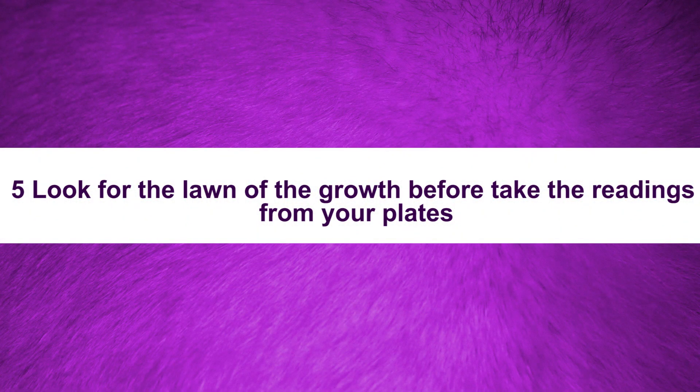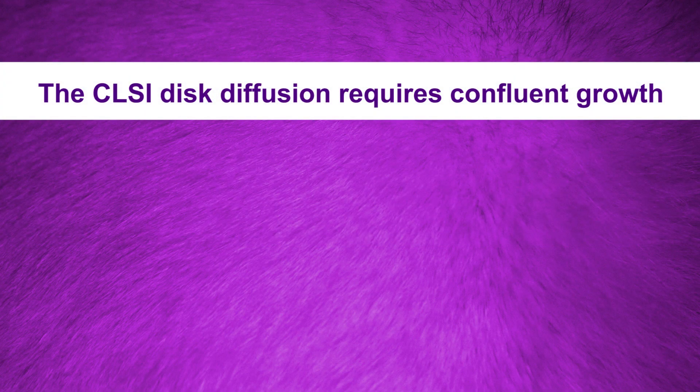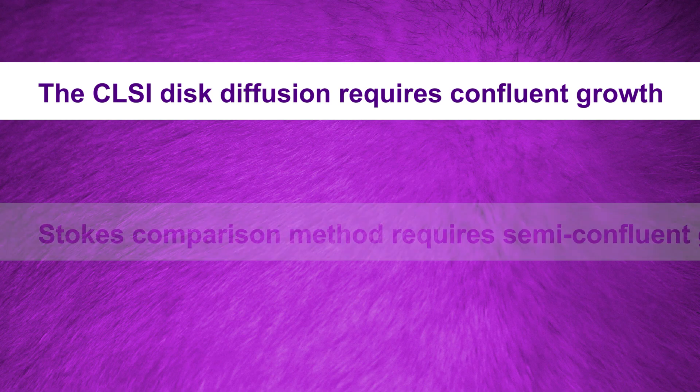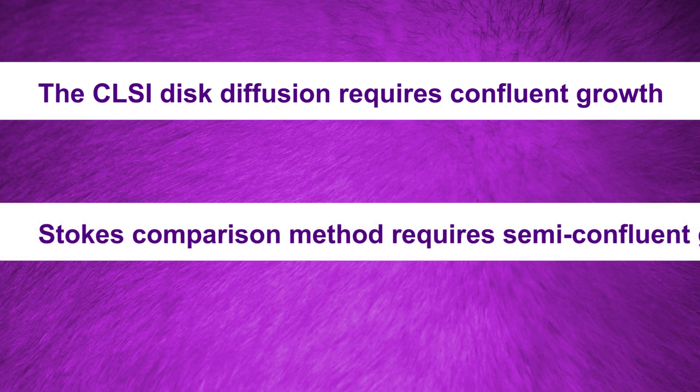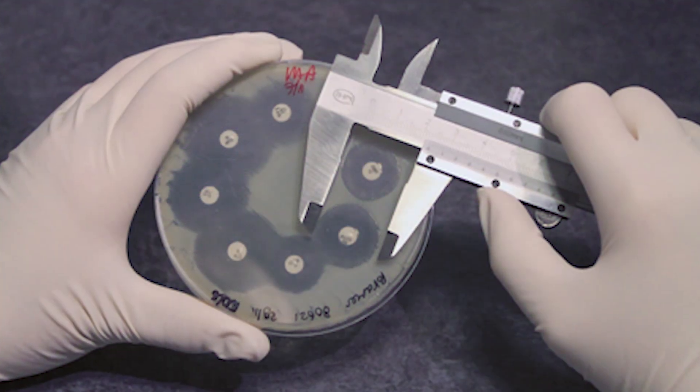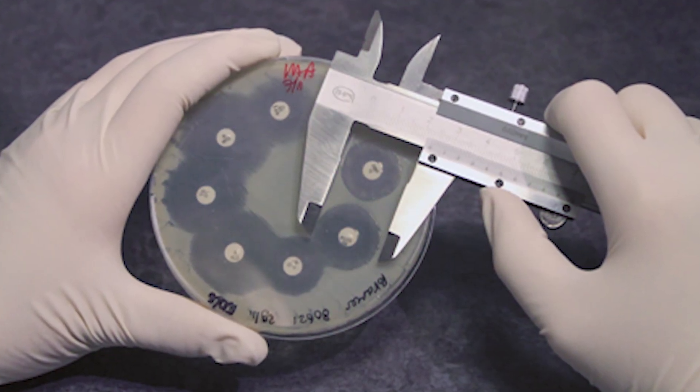Look for the level of growth before taking the readings of your plates. For example, the CLSI disk diffusion method requires confluent growth, while the stroke comparison method requires semi-confluent growth.